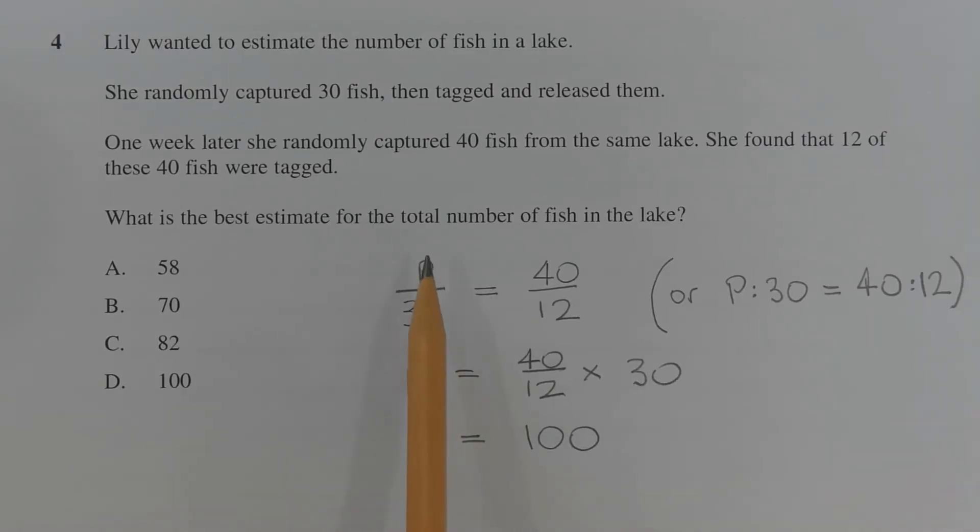So using fractions, p over 30 is equal to 40 over 12, or using ratios, the ratio of the population p to the 30 tagged fish is equal to the ratio of the 40 fish caught to the 12 fish of those 40 that are tagged.